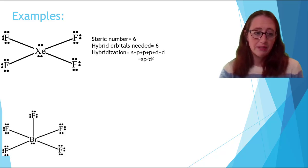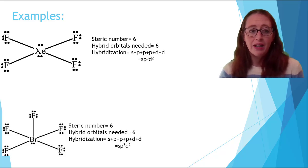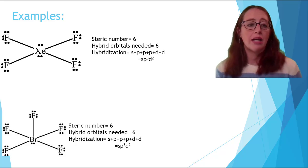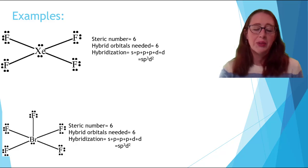For the next one, we have BrF5. So we have five bonded atoms. We have one lone pair. This gives us a steric number of six. Total hybrid orbitals needed is six. So we end up with the same thing, SP3D2. And that's also an octahedral electron geometry. And I should have said that with the first one, too. It's an electron geometry of octahedral. Of course, as a molecular geometry, it would be a bit different.